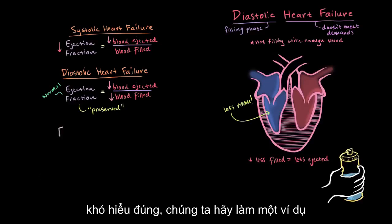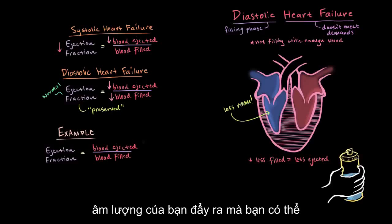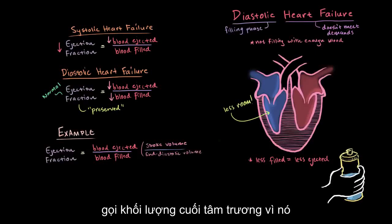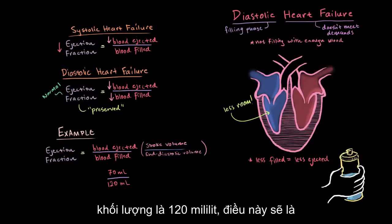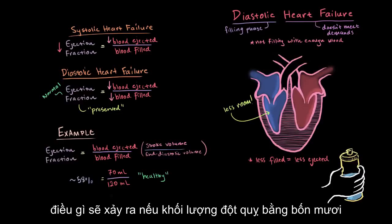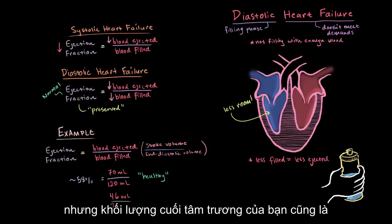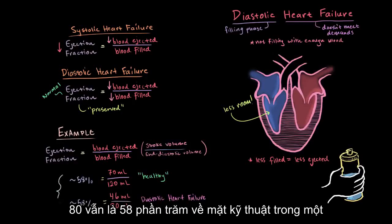That seems a little confusing, so let's do an example. Ejection fraction equals your volume ejected — also called stroke volume — divided by the total blood filled, also called end diastolic volume, because it's the volume at the end of diastole. Say your stroke volume is 70 milliliters and your end diastolic volume is 120 milliliters — that's considered healthy. 70 divided by 120 equals 58%, within a normal range. Now if stroke volume drops to 46 milliliters due to heart failure, but end diastolic volume also drops to 80 milliliters, 46 divided by 80 is still 58% — technically still in a normal range.